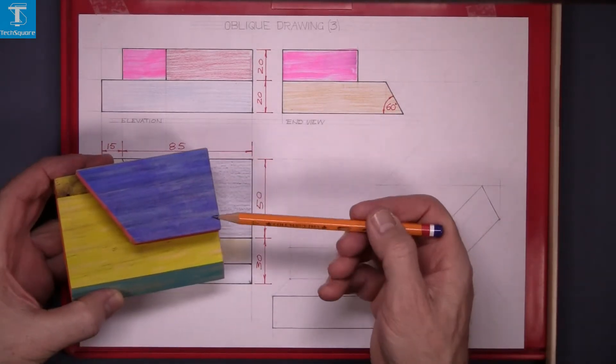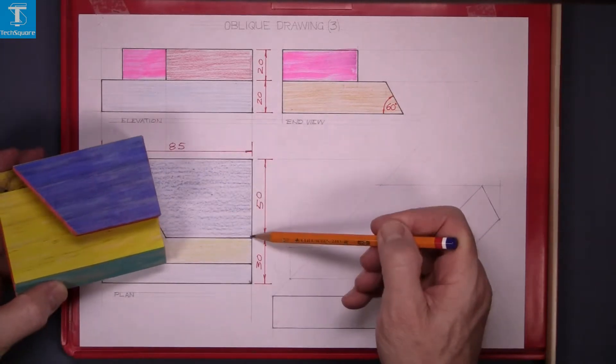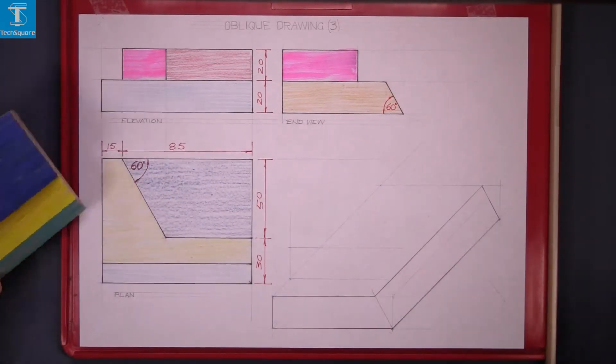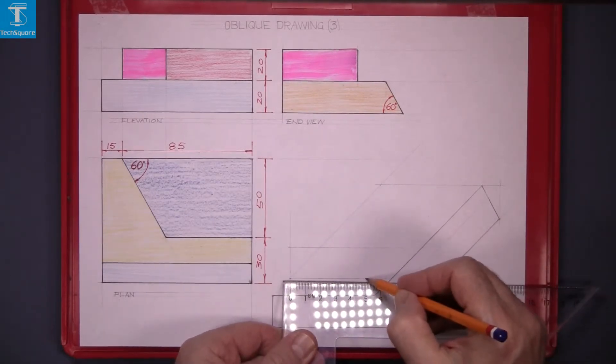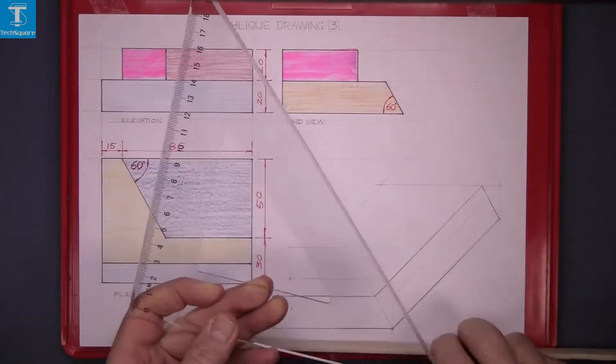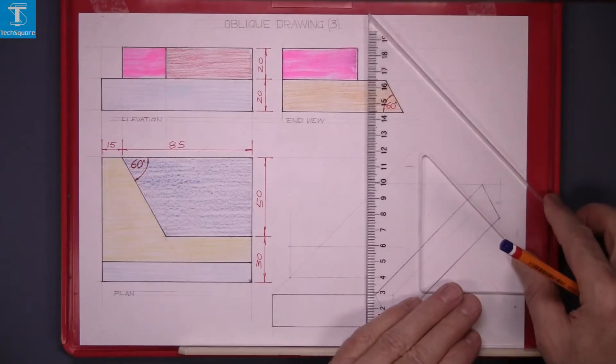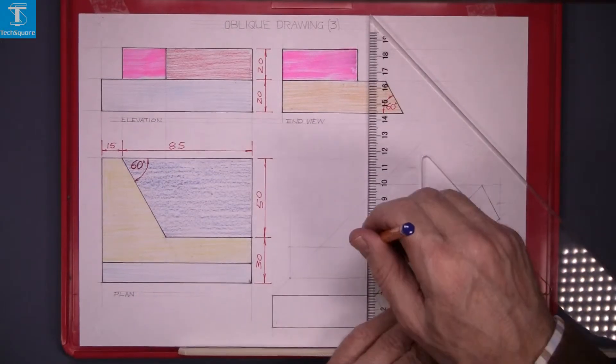The width of the blue piece now 50. So measure across 50 here and draw a vertical line there, and that's the end of the piece.